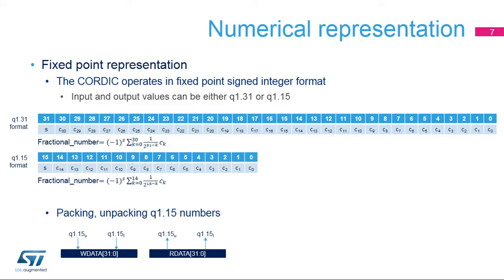In Q1.15 format, the numeric range is minus 1 (or 0x8000) to 1 minus 2 raised to the negative 15 (or 0x7FFF). This format has the advantage that two input arguments can be packed into a single 32-bit write, and two results can be fetched in one 32-bit read. However, the precision is reduced to 2 raised to the negative 15, i.e., around 3 times 10 raised to the negative 5.